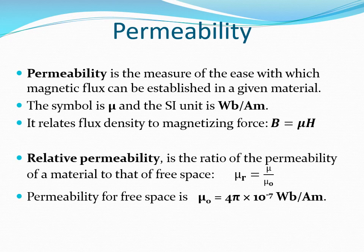Permeability is the measure of the ease with which magnetic flux can be established in a given material — you can relate it to conductivity. The symbol for permeability is mu, and the SI unit is the Weber per ampere-meter. Permeability relates flux density to magnetizing force by the formula B equals mu H. Relative permeability is the ratio of the permeability of a material to that of free space. The permeability of free space is denoted mu-naught and equals 4π times 10 to the power minus 7 Webers per ampere-meter. Relative permeability is denoted mu-R, therefore mu-R equals mu over mu-naught.